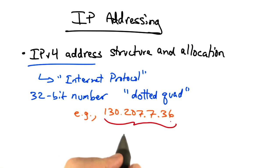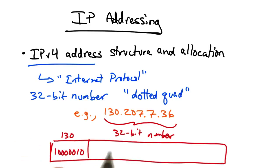Now this is just a convenient way of writing a 32-bit number. So 130 represents 8 bits, and 207 is another 8-bit number. 7 is another 8-bit number, as is 36.